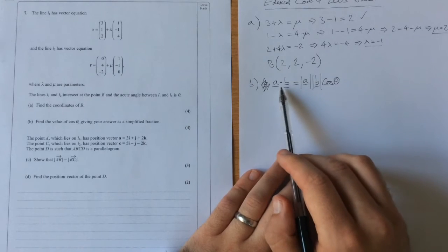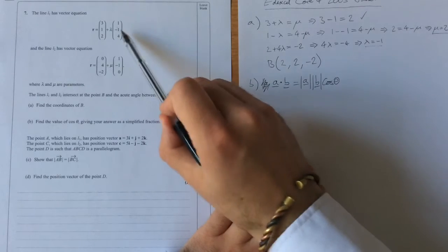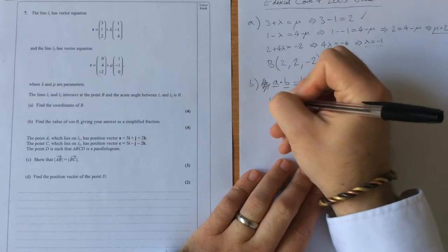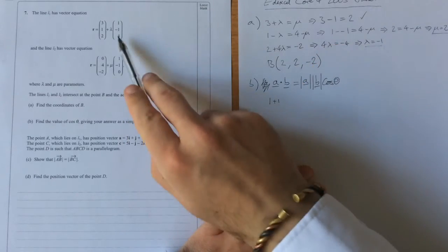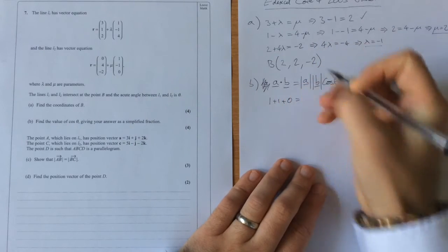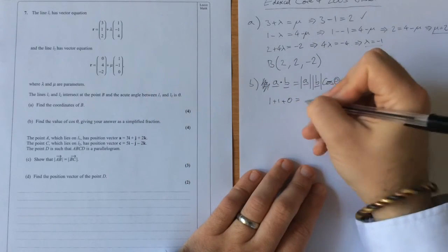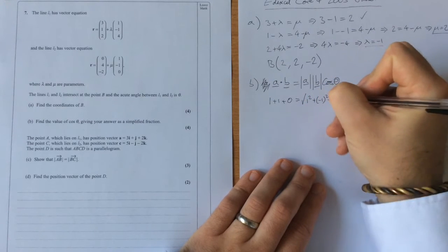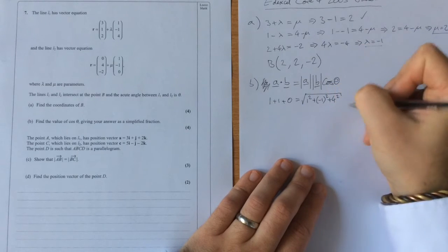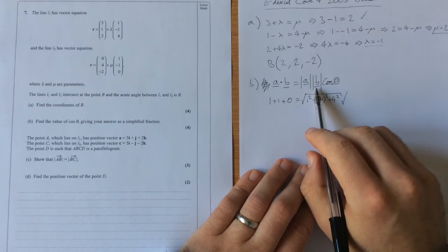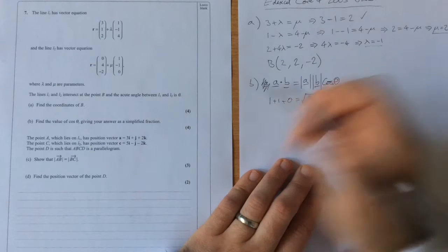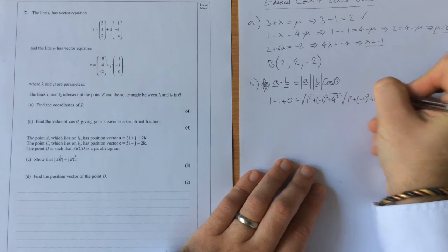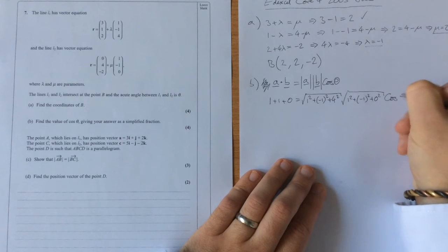So what we're going to do, we're going to dot them, which is to multiply the i's, j's and k's together. So 1 times 1 is 1, minus 1 times minus 1 is 1, 4 times 0 is 0. Modulus of this first one, so we're going to do the square root of 1 squared plus minus 1 squared plus 4 squared times the modulus of b, so this is going to be 1 squared plus minus 1 squared plus 0 squared times cos theta.